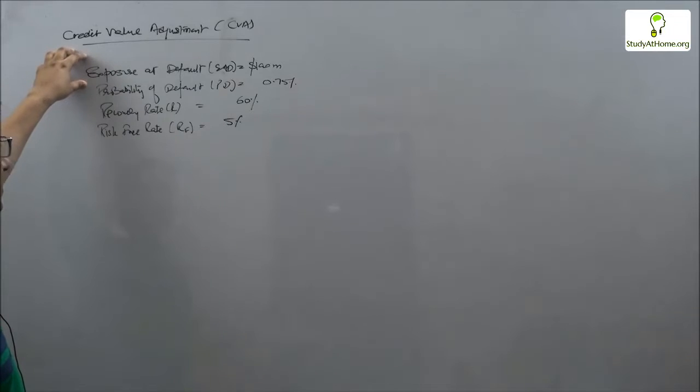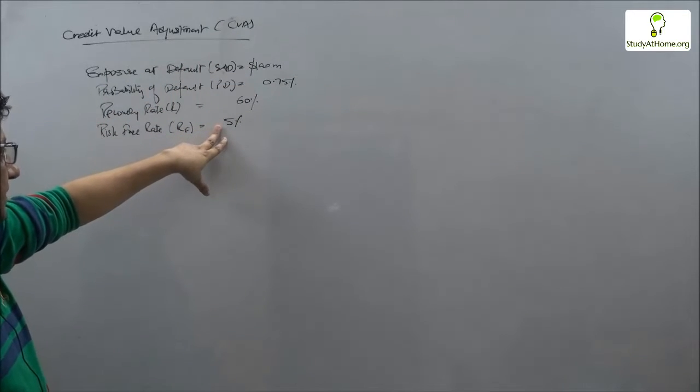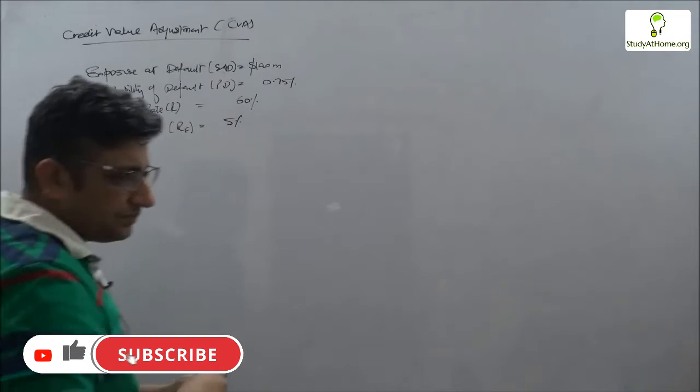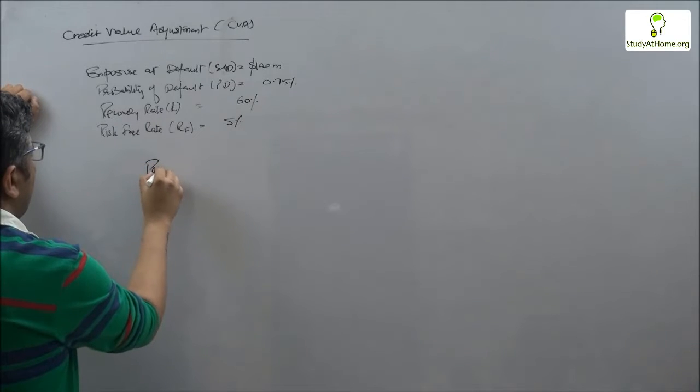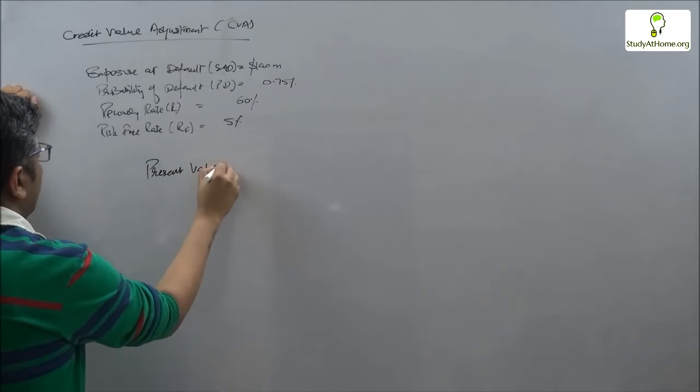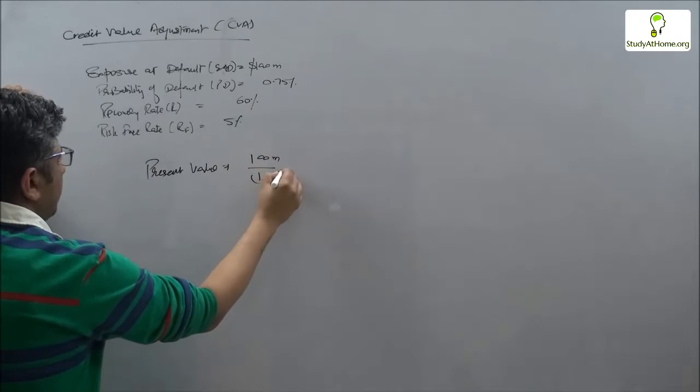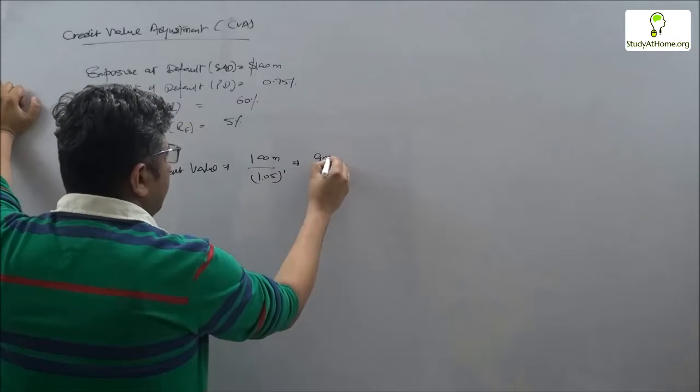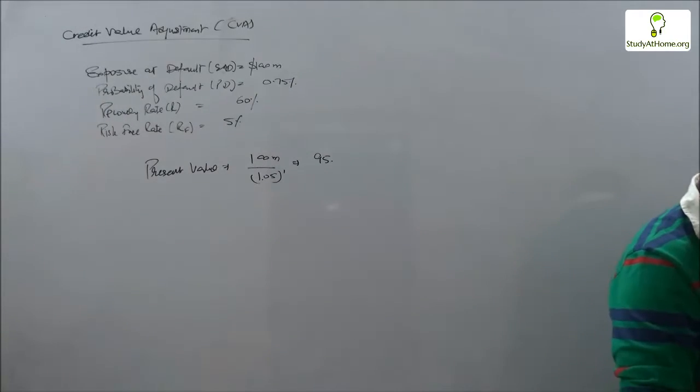For example, 100 million dollars in a year's time and my discount rate is 5 percent. I can calculate the present value as 100 million divided by 1.05 to the power 1, which comes to 95.24 million dollars.